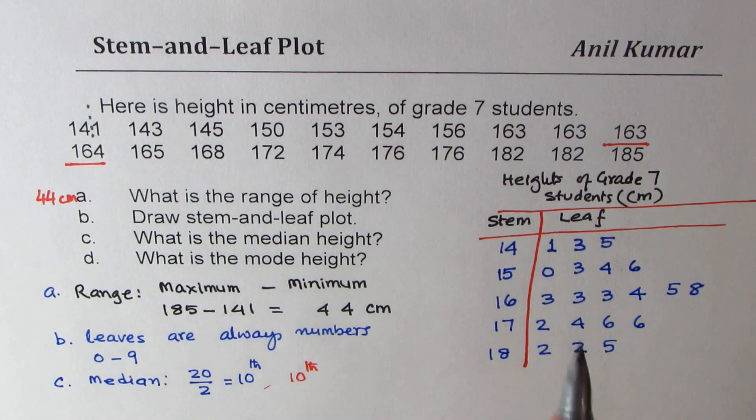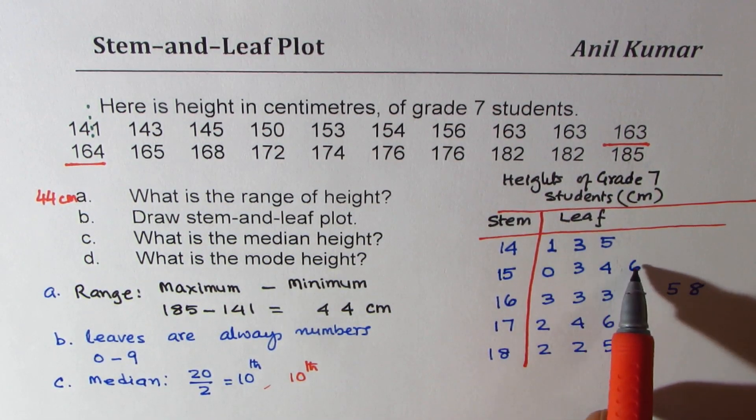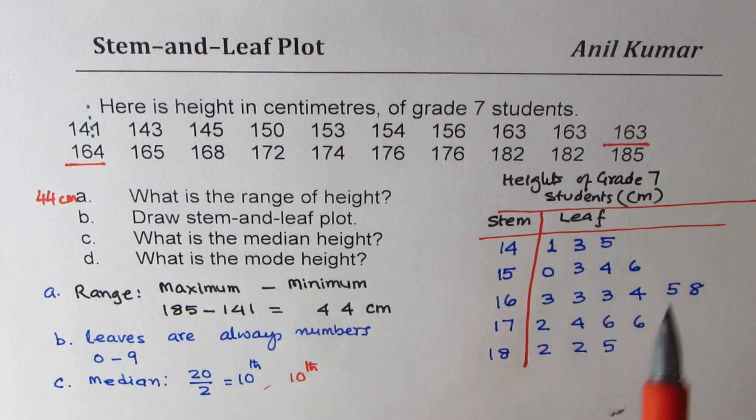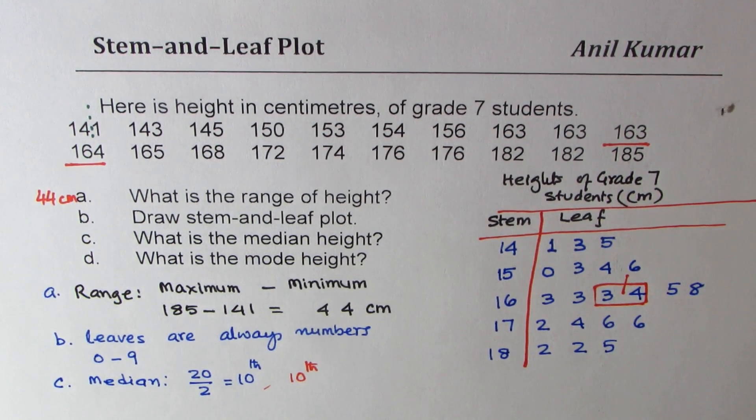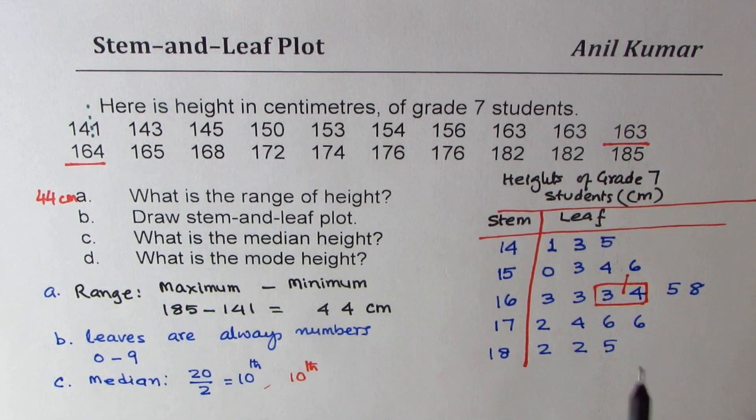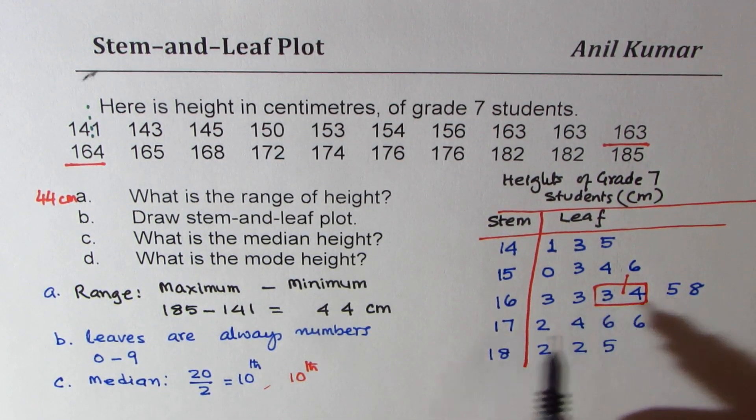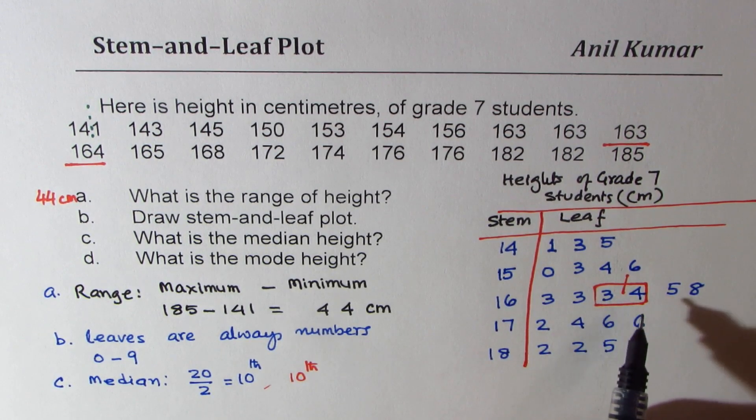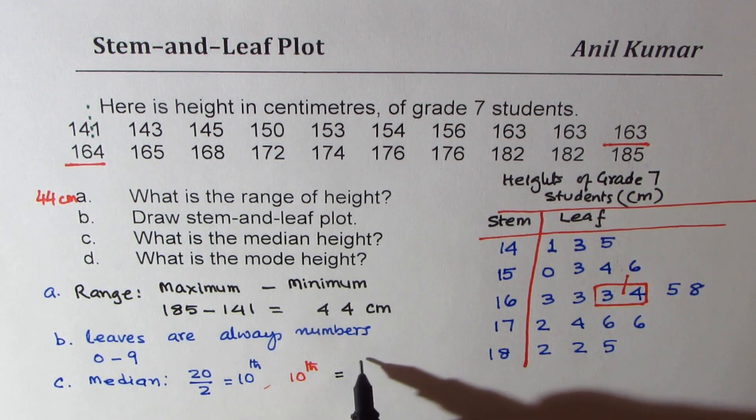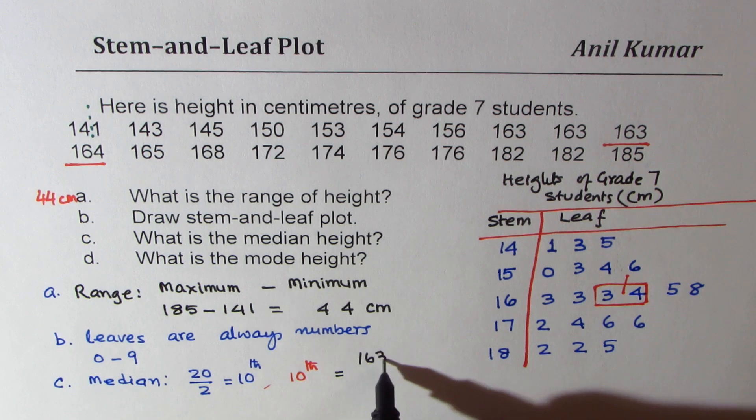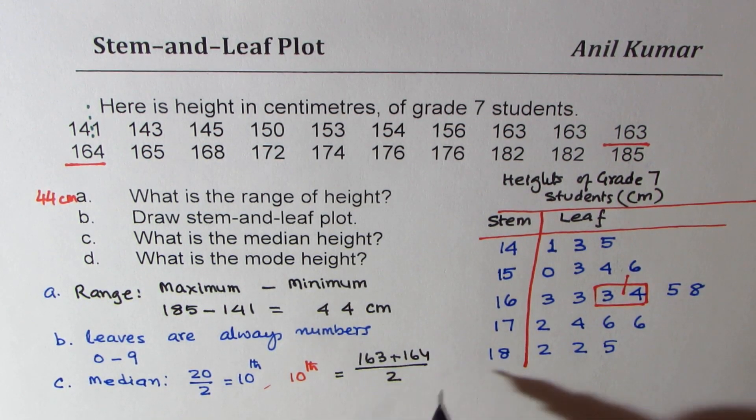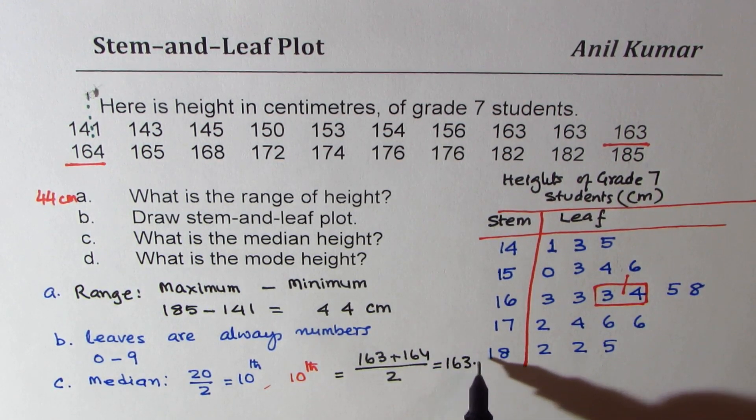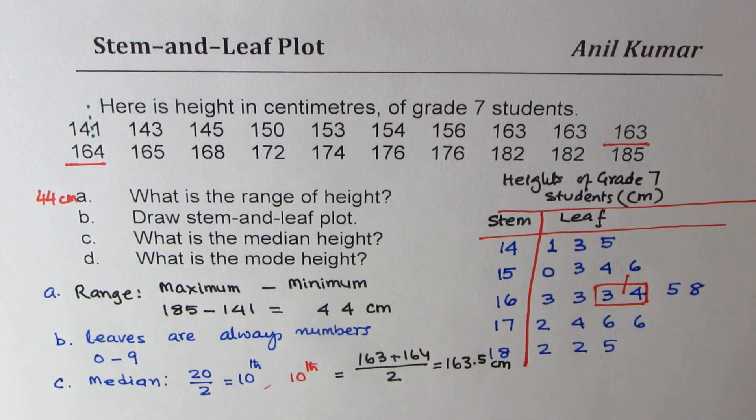So 10 and 11. So median is in between these two. Between 3 and 4, it is 3.5, so 163.5. So median is equal to, you could do like this also, 163 plus 164 divided by 2. So that gives you 163.5 centimeters. So that is how you get median.